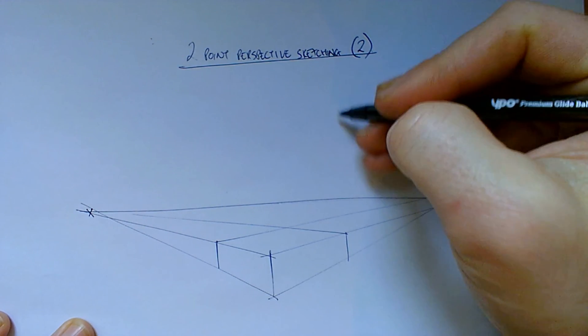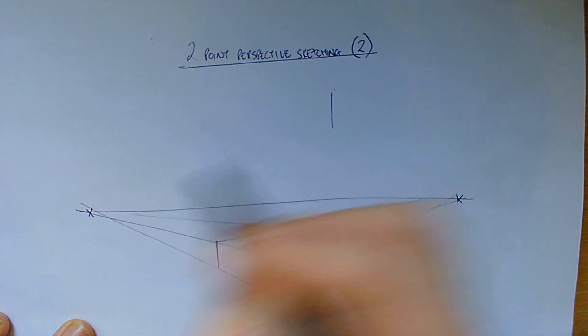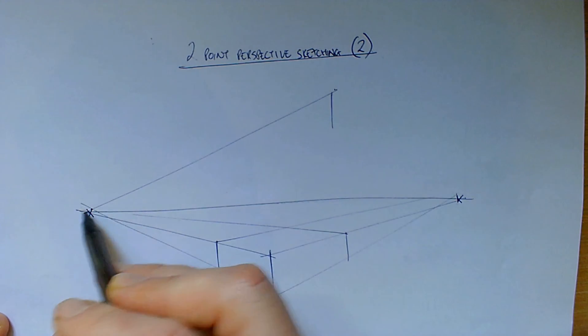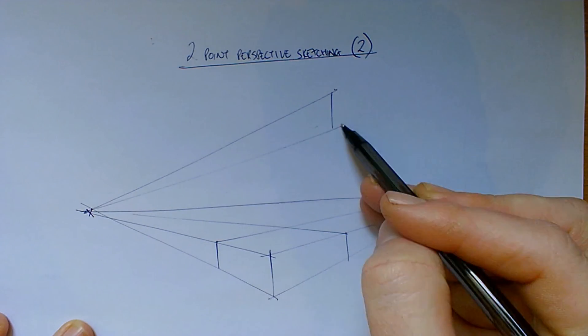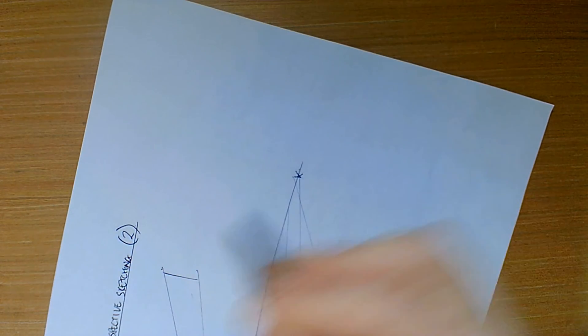So we're going to draw this one slightly off the centre. Just here we'll start with our vertical line. And from the top and the bottom we're going to join to the first vanishing point. And we'll go to the second as well. Adjusting the page so it's easy to draw these lines.